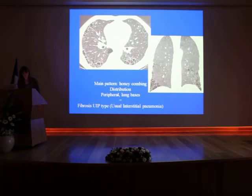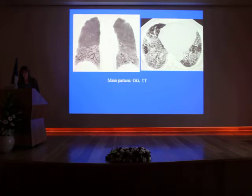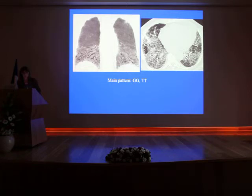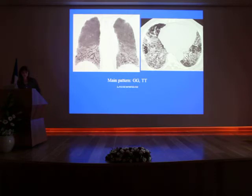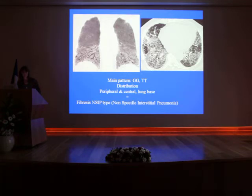Here the main pattern is ground glass with traction bronchiectasis. You can see this is a minimum intensity projection reformation, which helps differentiation between cavities due to uncamping and enlargement of the bronchi. The main pattern is ground glass and traction bronchiectasis — this is NSIP. You can see the patient had a surgical biopsy to confirm the diagnosis.